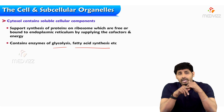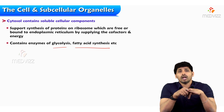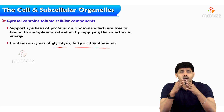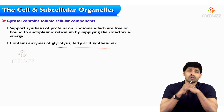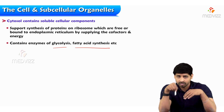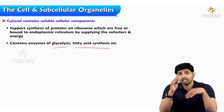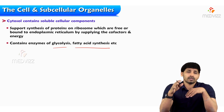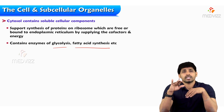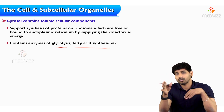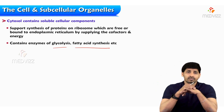Glycolysis takes place in the cytosol. The end product of glycolysis is pyruvate, and this pyruvate is not allowed to directly enter into the mitochondria. It has to take a U-turn: pyruvate has to convert into another form known as acetyl-CoA, and this acetyl-CoA is permeable through the outer mitochondrial membrane. This acetyl-CoA is the starting substance of the TCA cycle, where it undergoes further oxidation.